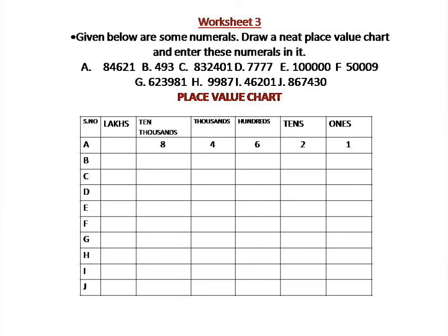Here, two sums are given. The first sum is done for you. The first sum is 84,621. These digits are entered in the place value chart according to their places: ones place — 1, tens place — 2, hundreds place — 6, thousands place — 4, ten-thousands place — 8. Now enter the remaining numerals according to the place value chart.